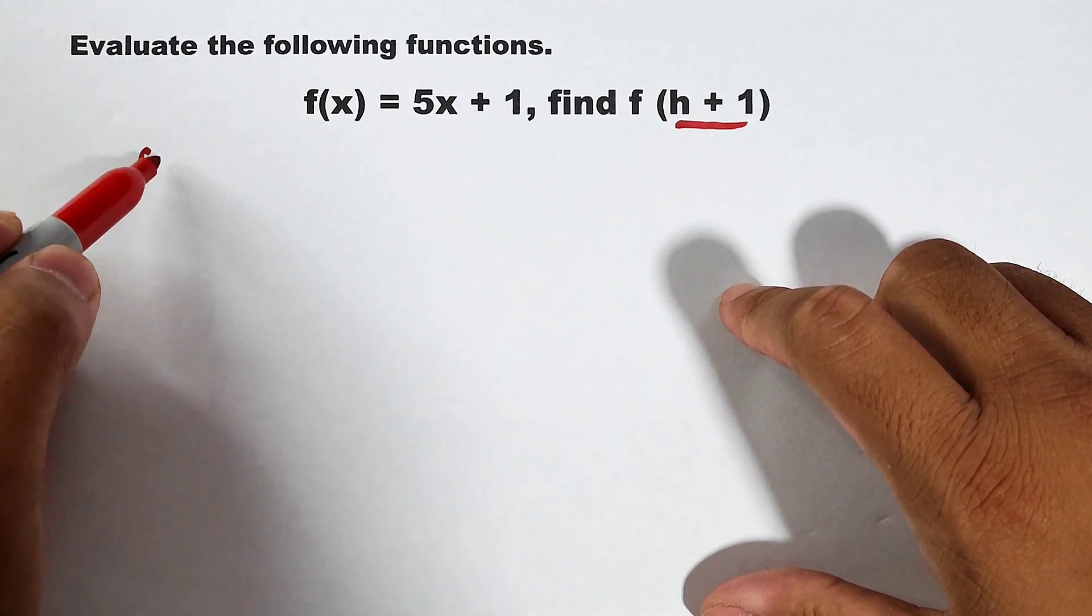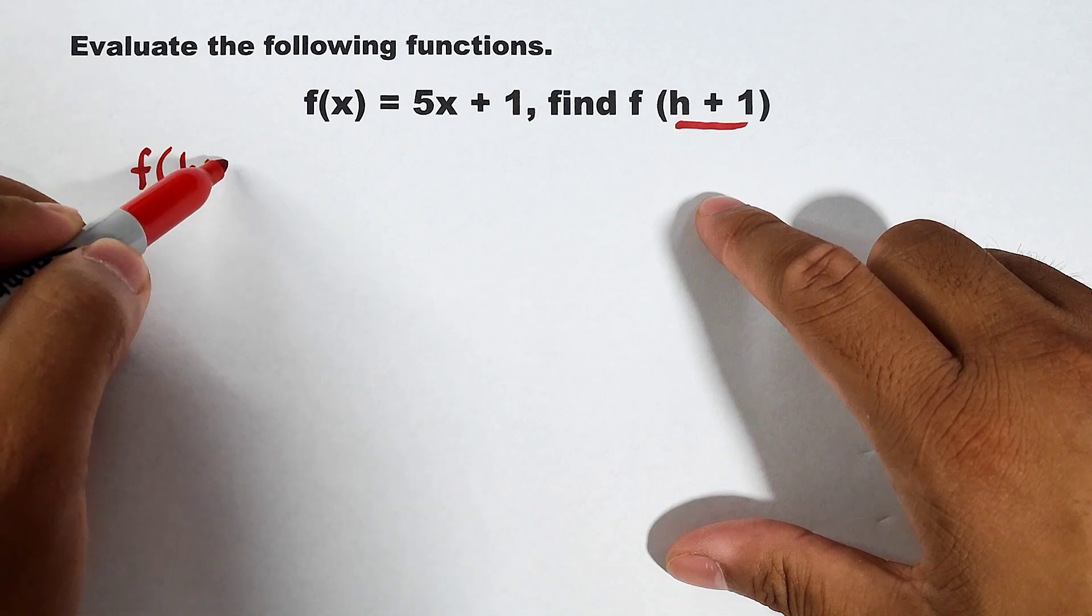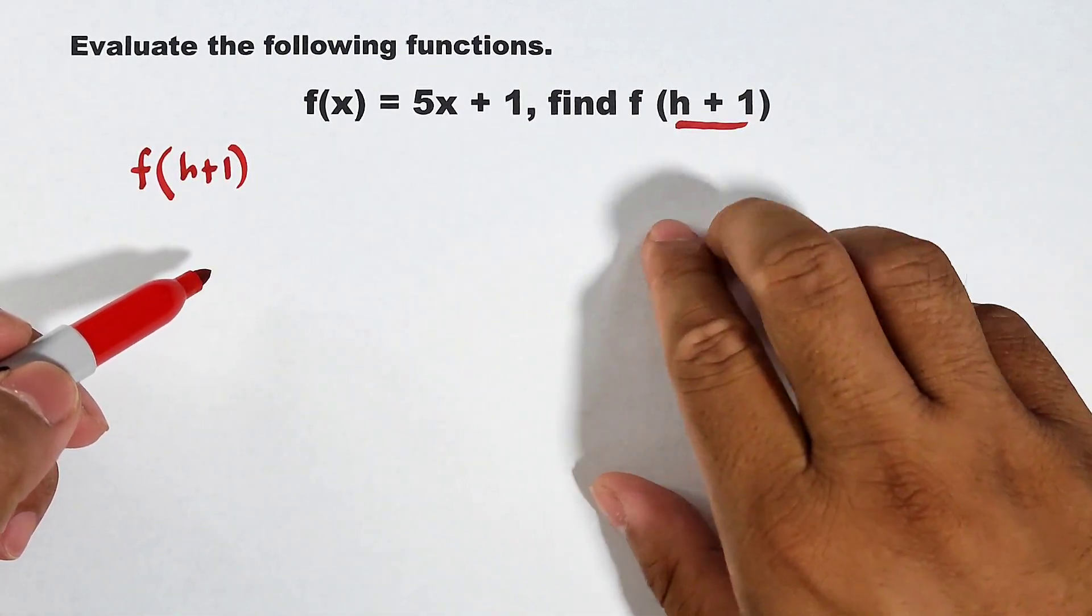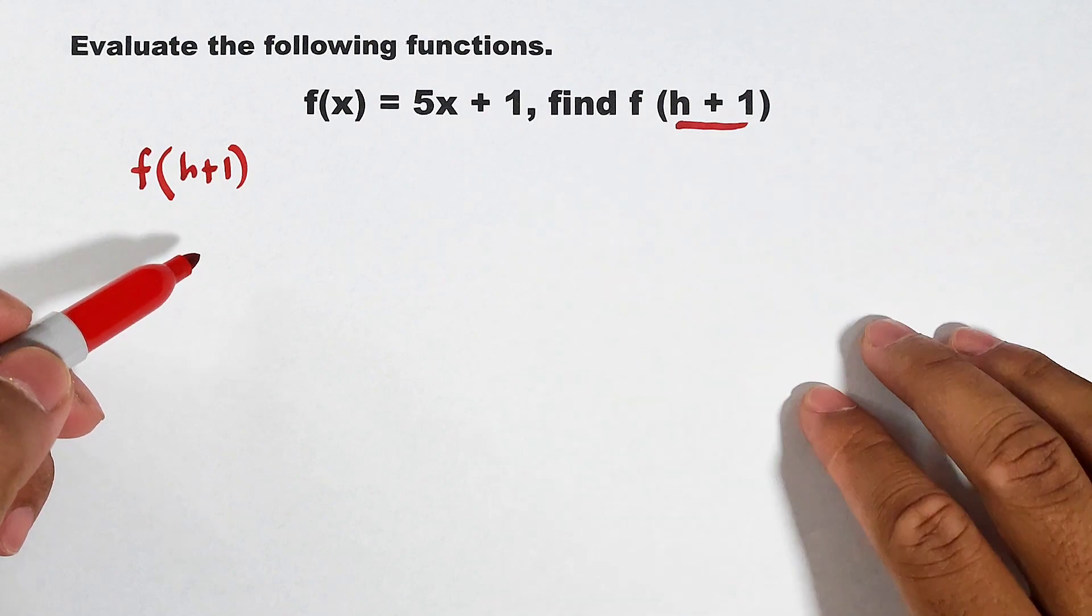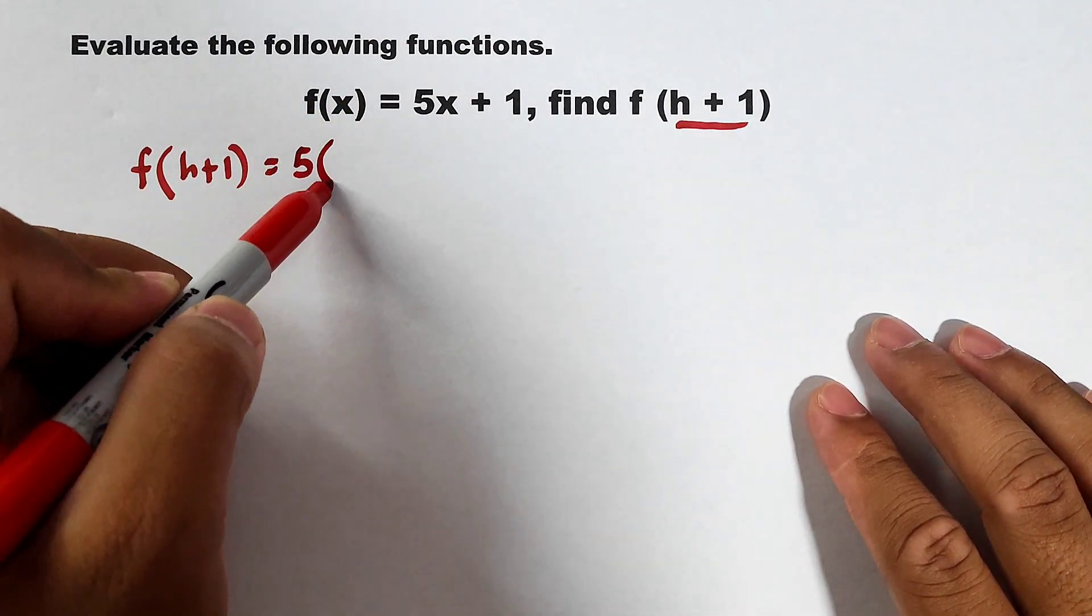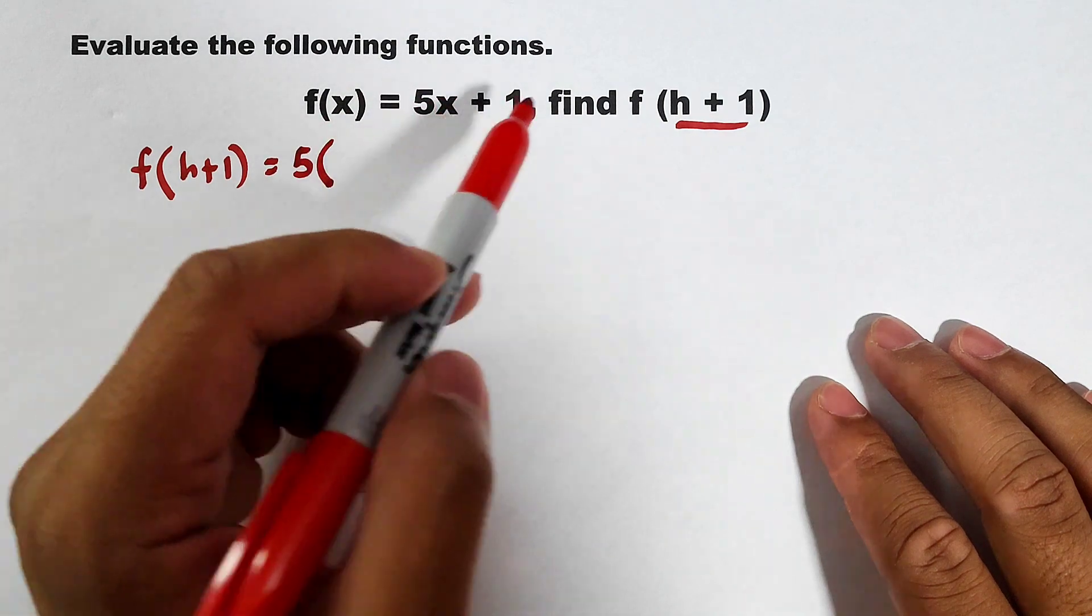Given the function f and your input is h plus 1, it simply means that you will replace this x by h plus 1. So what will happen is that we have 5 times your x which is h plus 1.